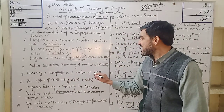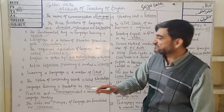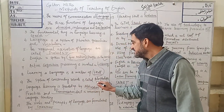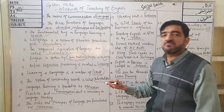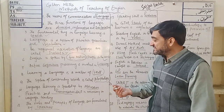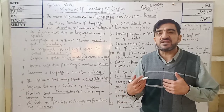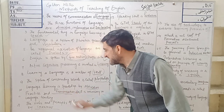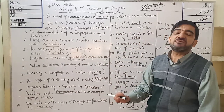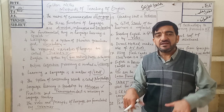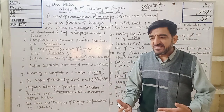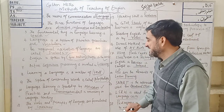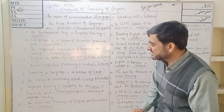Learning a language is a matter of skill. MCQ 9: The system of constructing words is called morphology. Morphology is the branch of linguistics concerned with the formation of words. MCQ 10: Language learning is speeded up by motivation. Motivation is a process in which the unwillingness of the learner is changed into willingness, so motivation is very much necessary.